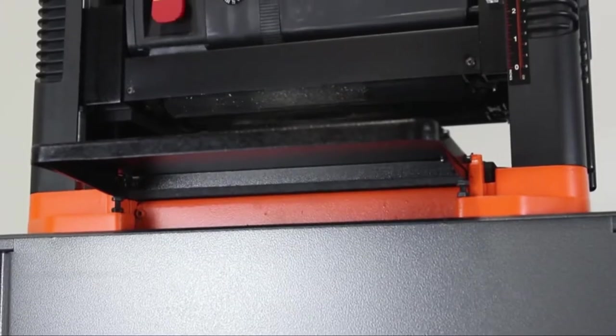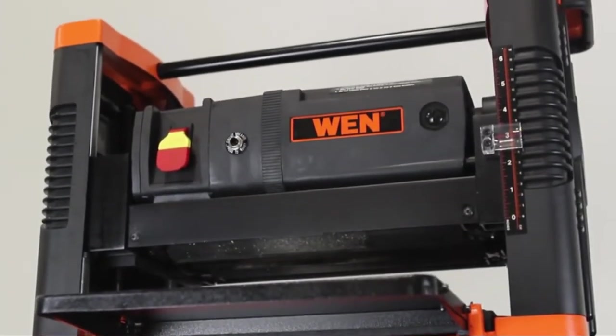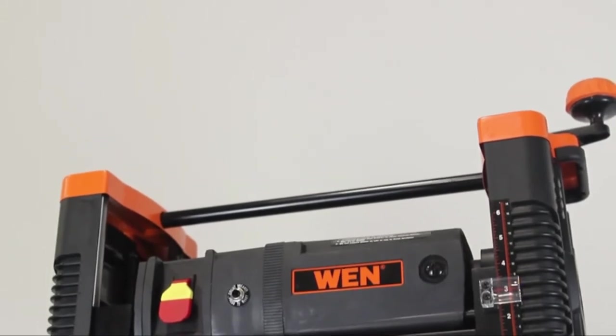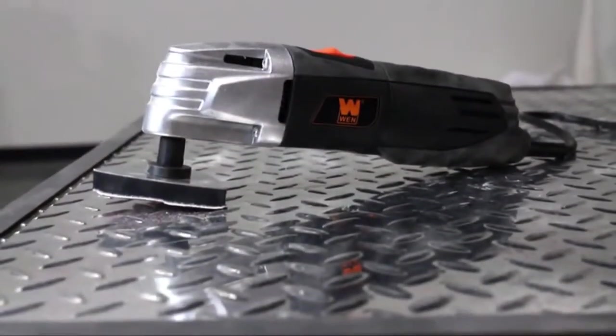Stand and work light. We will also briefly be employing the help of the Wynn 12.5 inch thickness planer and the Wynn variable speed oscillating tool.